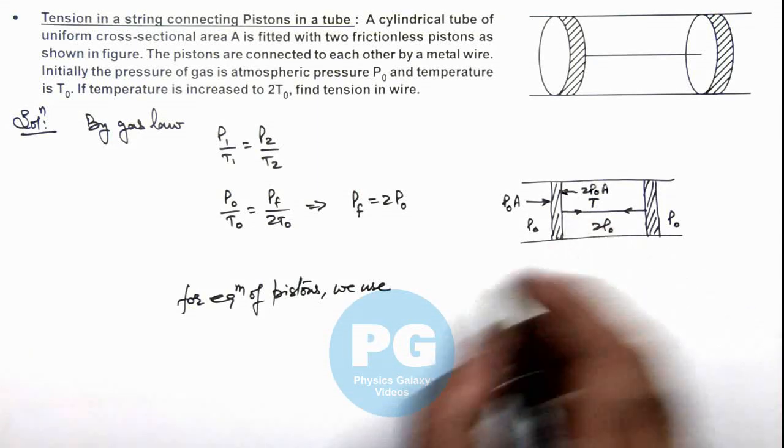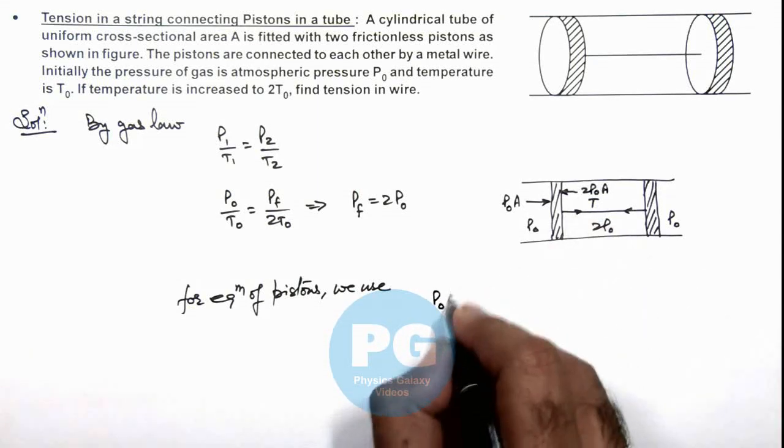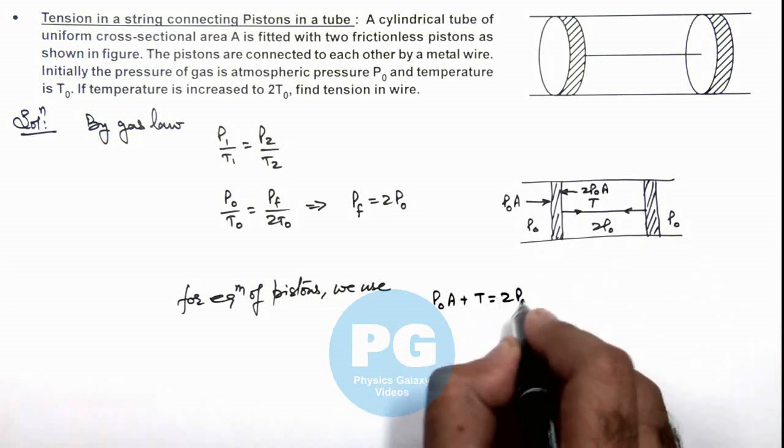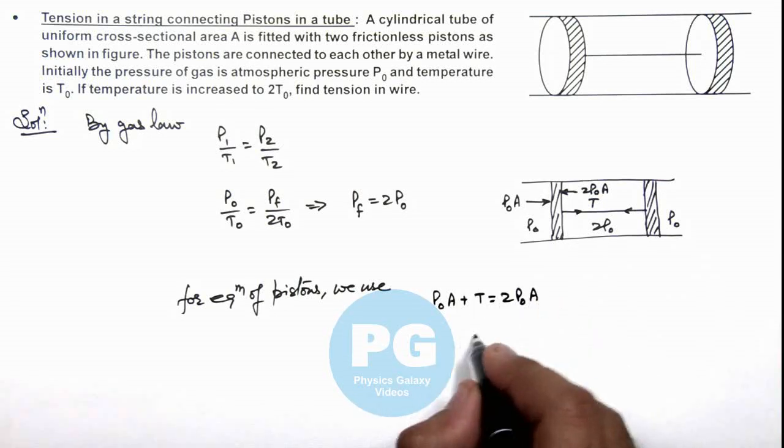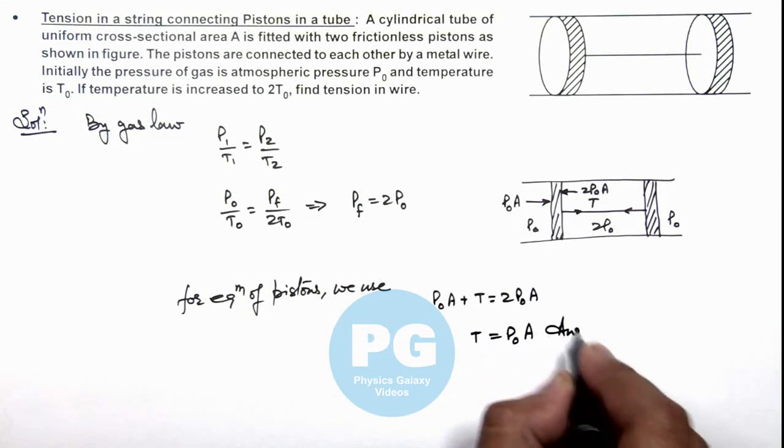So here we can write P₀A plus T should be equal to 2P₀A. So this gives us the tension in the string is equal to P₀A, that is the result of this problem.